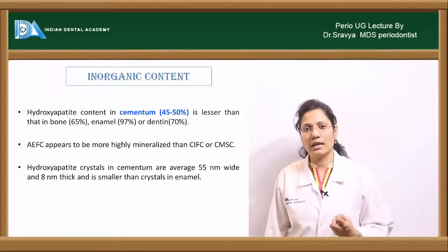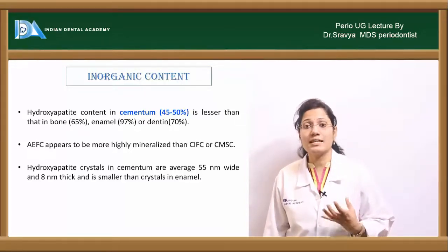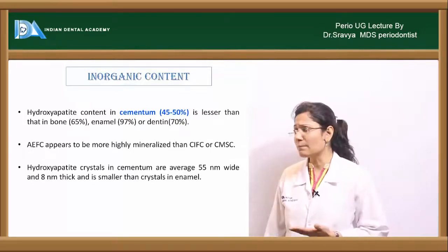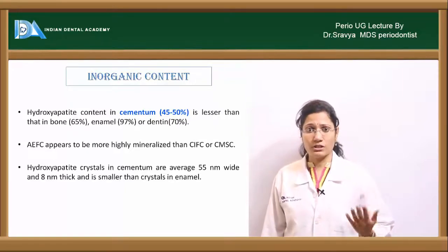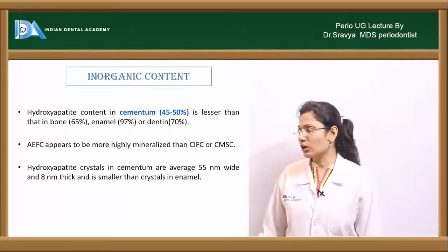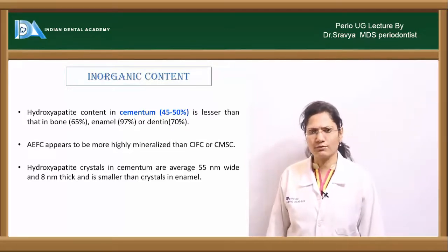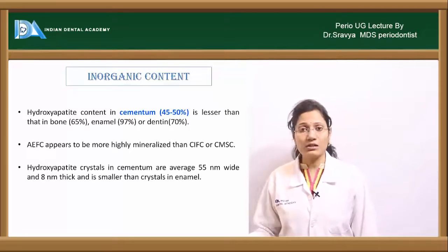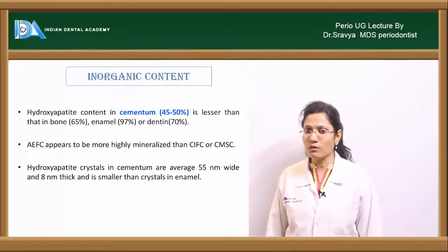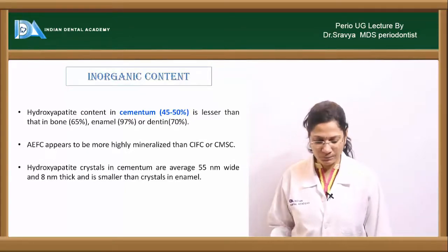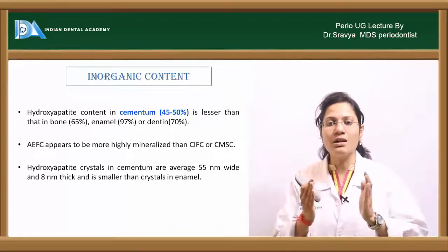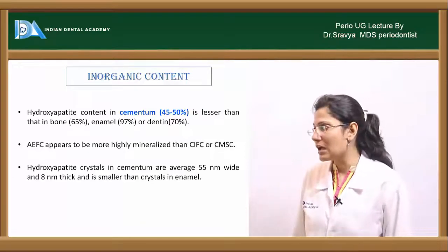Comparing mineralization: enamel has about 97% inorganic constituent, dentine about 70%, bone about 65%, and cementum is the least calcified at about 45–50%. Acellular extrinsic fiber cementum is more calcified compared to other forms. The inorganic constituents form hydroxyapatite crystals arranged 55 nanometers wide and 8 nanometers in thickness.